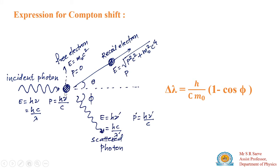For this we have to learn about this diagram: what is the energy of the incident photon, and what is the energy of the electron which is at rest. The energy of the incident photon is h mu, and the momentum of the photon is h mu divided by c. This is the electron in the rest position, so its energy is m0 times c squared, and since it is at rest, its momentum is zero.